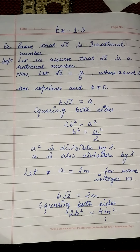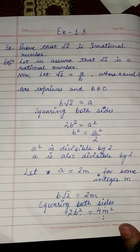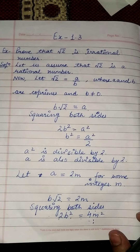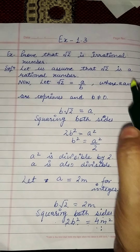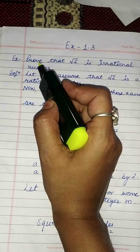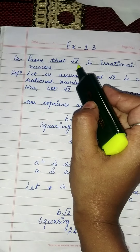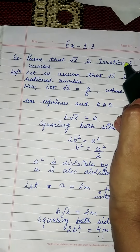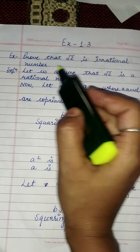Good morning students. We are going to start exercise 1.3. Our first example is: prove that under root 2 is an irrational number.